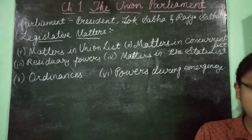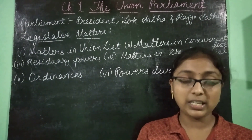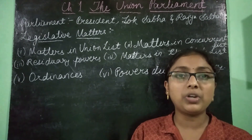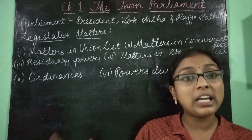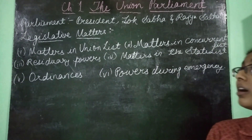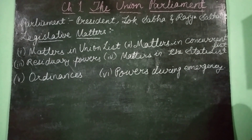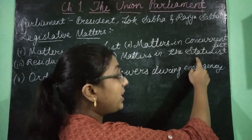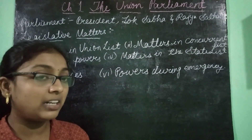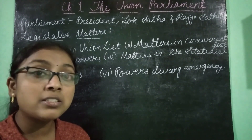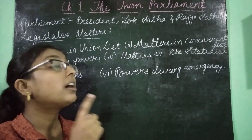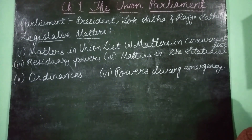The third area is residual powers: the matters not included in any of the three lists — those matters can also be legislated upon by the parliament. Fourth, there are special situations in which parliament can make laws on matters in the State List. The first such situation is when an emergency is proclaimed in that state — during a proclamation of emergency, laws regarding matters in the State List are also made by parliament.